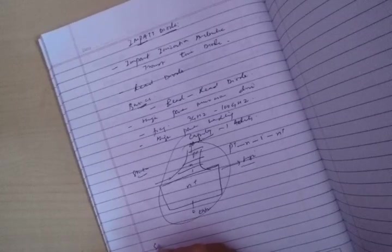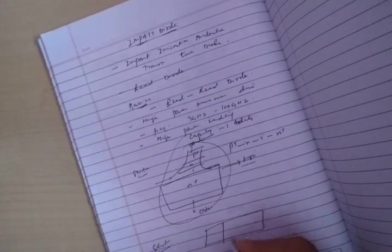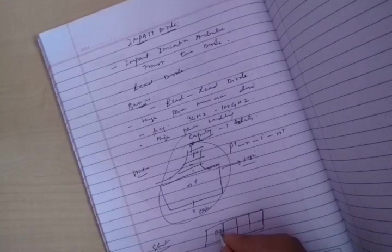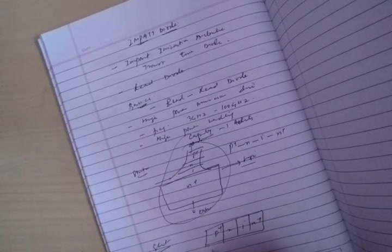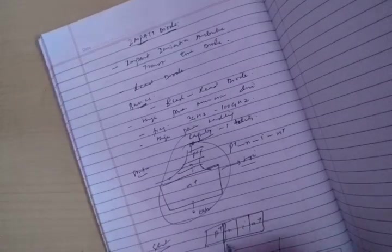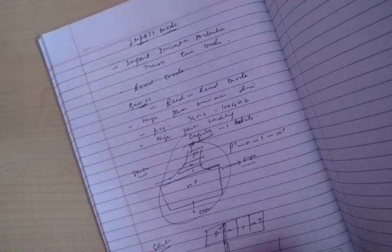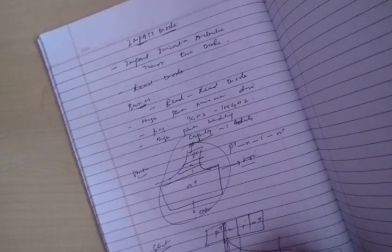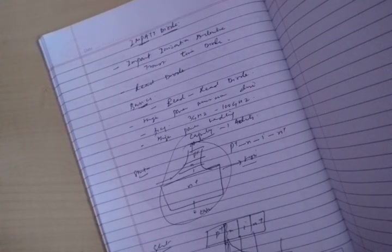Let's see the electric field profile. For example, this is P region, P+ N I and N+. It has an avalanche region at one point where the electric field will be very high. This point is known as avalanche region where electric field is high.